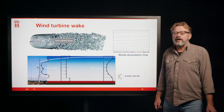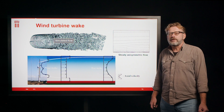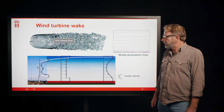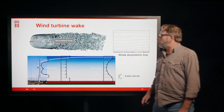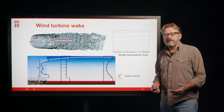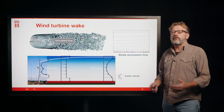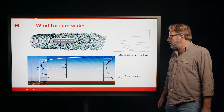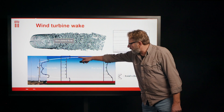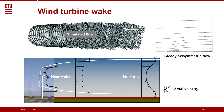If you look at how velocity profiles could look behind a wind turbine, we can see the near wake over here, where you can really feel the presence of the nacelle, the tip losses, etc. But if you go further down into the wake, you'll see a much more one-dimensional velocity profile. And when you come to the far wake, you'll see it becomes a Gaussian far-wake velocity profile.